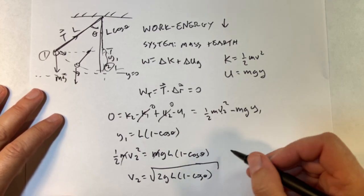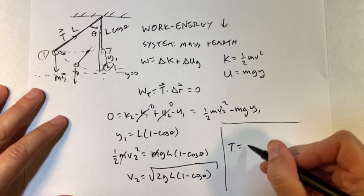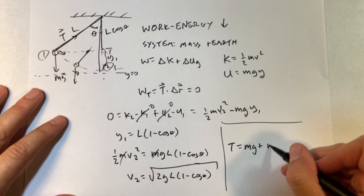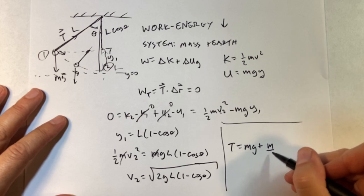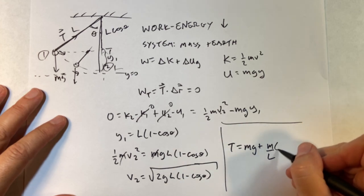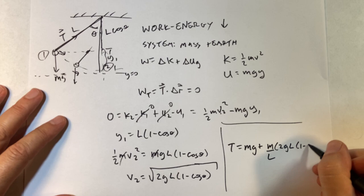Now I can put that back in to my tension equation from before, and I get T equals M G plus M over L. And then I have to take V2 squared, which is just this stuff. So it's going to be two G L one minus cosine theta.